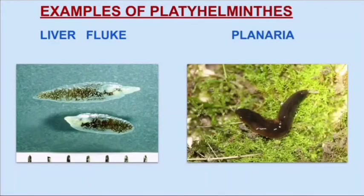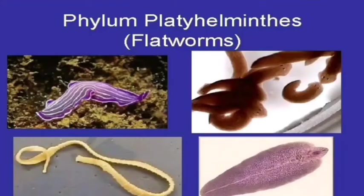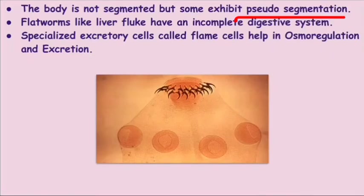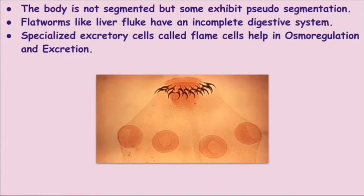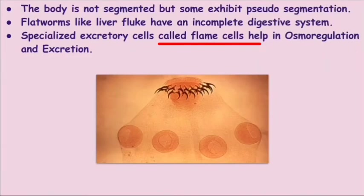Examples of Platyhelminthes include the liver fluke and planaria. The body is not segmented, but some exhibit pseudo-segmentation — 'pseudo' means false. Flatworms like the liver fluke have an incomplete digestive system. They also have specialized excretory cells called flame cells, otherwise known as solenocytes, which help in osmoregulation and excretion.